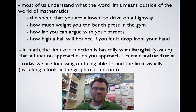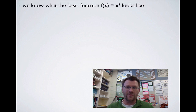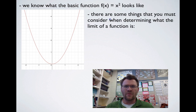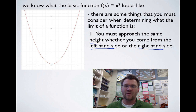Today we're just going to focus on finding the limit visually by taking a look at the graph of a function. We know what the basic function f(x) = x² looks like — it's a basic parabola as shown on the screen. There are some things you must consider when determining the limit of a function. First, you must approach the same height whether you come from the left-hand side or the right-hand side. In order for a limit to exist, it has to be the same height from both sides.